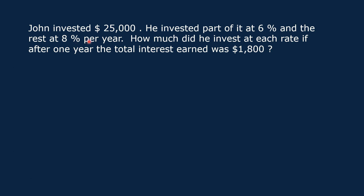John invested $25,000. He invested part of it at 6% and the rest at 8% per year. How much did he invest at each rate if, after one year, the total interest earned was $1,800?